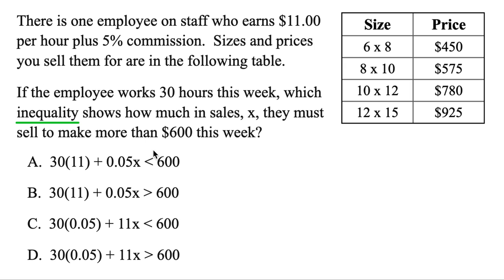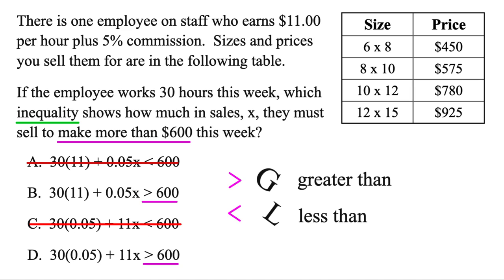To solve this problem, we want to know which inequality or which of these symbols is correct. If the employee works 30 hours this week, which inequality shows how much in sales X they must sell in order to make more than $600 this week? So we know it's going to be more than $600. The key is you could turn these each into different letters. The top one you could turn into a G, the bottom one an L. In other words, the first one's greater than, the second one is less than. And because we want to make more than $600 this week, we want to make greater than $600. So it has to be this symbol. It could be B or it could be D. And we'll cross out the other two.